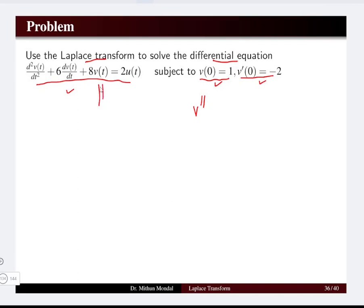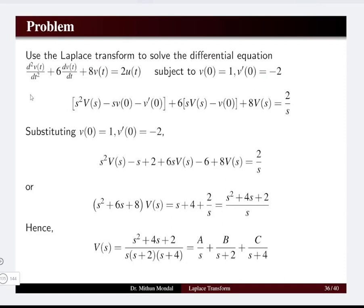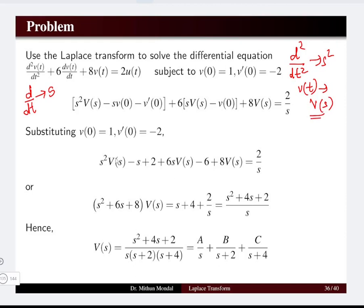We have already seen how to solve these second-order differential equations in the time domain. Now we will see how this differential equation can be solved more easily by converting it using the Laplace transform properties. To convert d/dt we use the Laplace variable s, and for the second differentiation d²/dt² we convert to s². So d²v(t)/dt² becomes s²V(s) − sV(0) − v'(0) to account for initial conditions in second-order form.